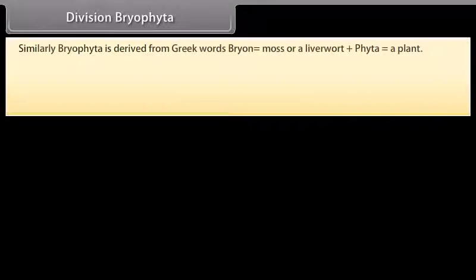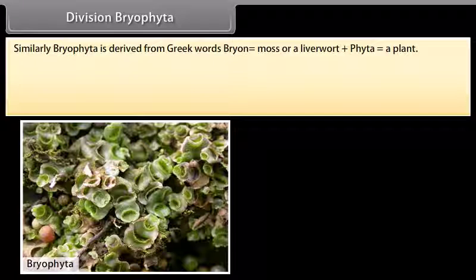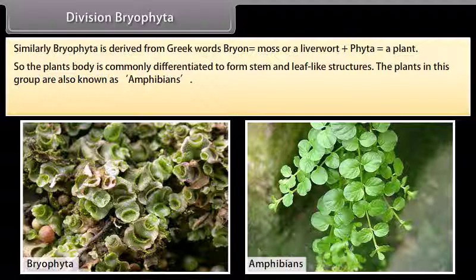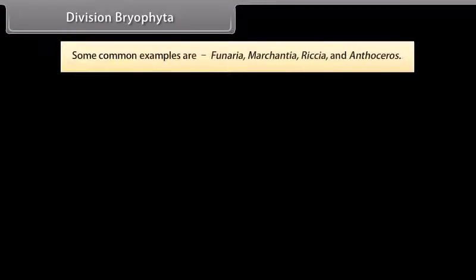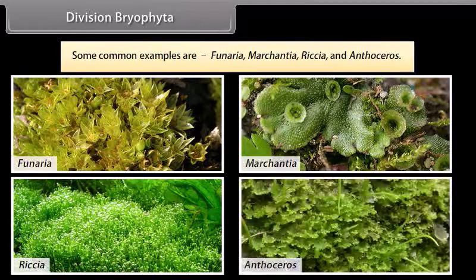Bryophyta is derived from Greek words: bryon, meaning moss or liverwort, plus phyta, meaning a plant. The plant's body is commonly differentiated to form stem- and leaf-like structures. The plants in this group are also known as amphibians of the plant kingdom. There are no specialized tissues to conduct water and minerals. Some common examples are Funaria, Marchantia, Riccia, and Anthoceros.